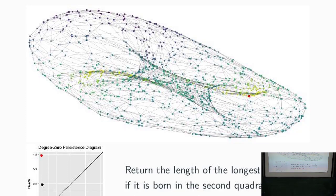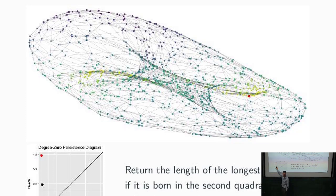Now we can do persistent homology. We compute the persistence diagram looking at degree-zero persistent homology, and we get two bars — two points on the persistence diagram. Both are born around minus one, coming from our two minima; one of them dies at the saddle points around zero, and the other goes to the global maximum.